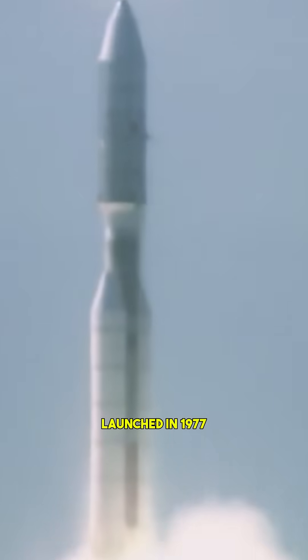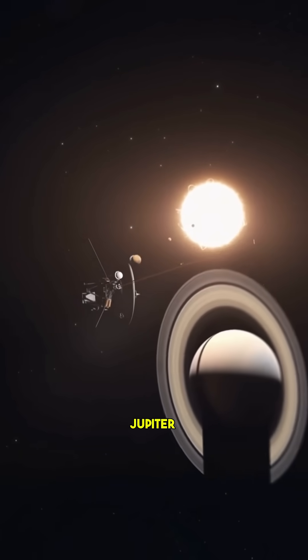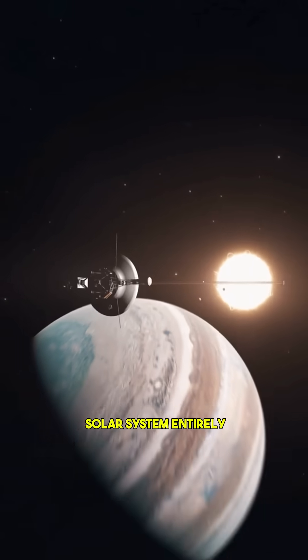Launched in 1977, Voyager 1 explored Jupiter and Saturn before leaving the solar system entirely.